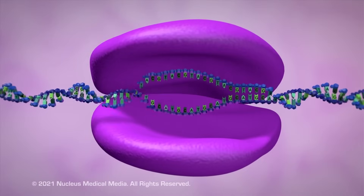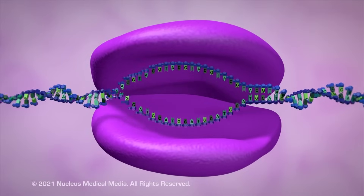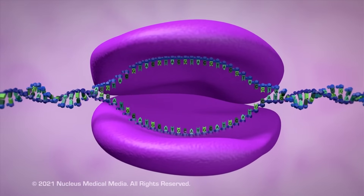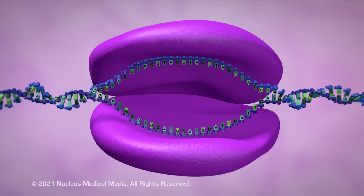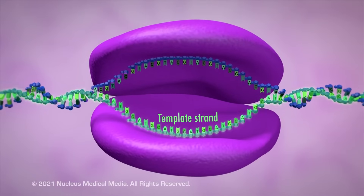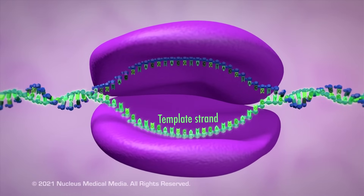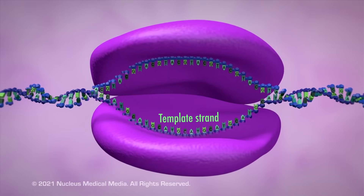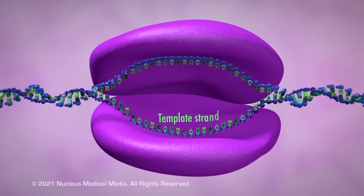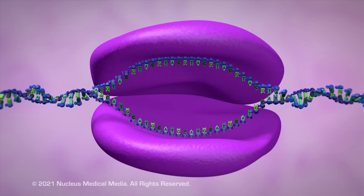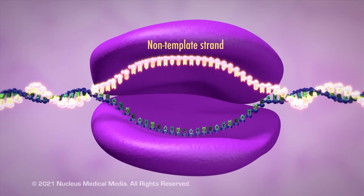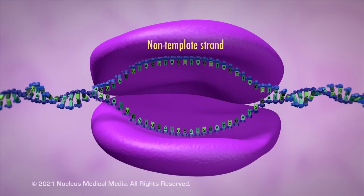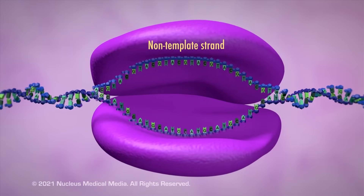RNA polymerase causes a particular area of the DNA helix to unwind and separate into two strands. One of the strands, often called the template strand, is the side of DNA that is read or transcribed by the messenger RNA. The other strand of DNA, often called the non-template strand, isn't transcribed by the messenger RNA.